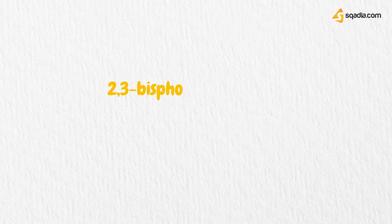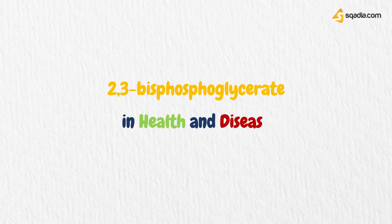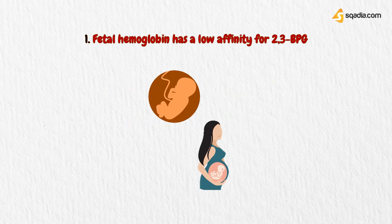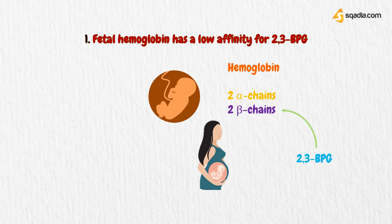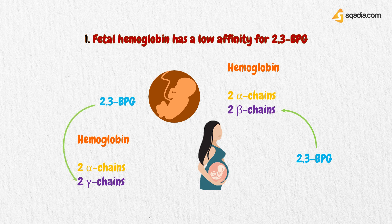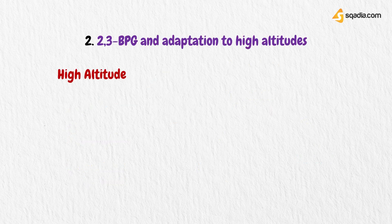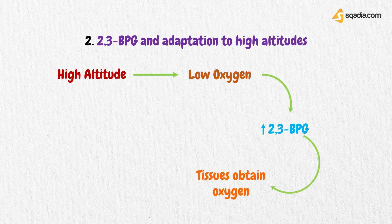Like any other pathway, 2,3-BPG is also involved in health and disease. First, it facilitates the transfer of oxygen from mother to fetus. Adults have 2 alpha chains and 2 beta chains in their hemoglobin, and 2,3-BPG binds with the beta chains. However, in the fetus, hemoglobin has 2 alpha chains and 2 gamma chains, giving it low affinity for 2,3-BPG, making the transfer of oxygen from mother to baby easier. The second advantage is that 2,3-BPG increases the availability of oxygen to tissues at high altitudes, where oxygen is lower, by increasing in concentration.